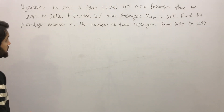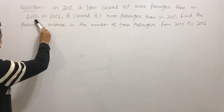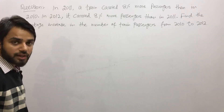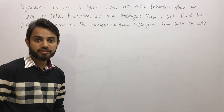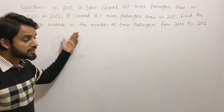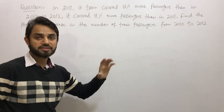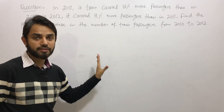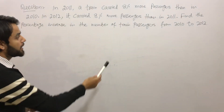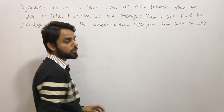The question says: in 2011, a train carried 8% more passengers than in 2010. In 2012, it carried 8% more passengers than in 2011. We don't know how many passengers the train was carrying initially in 2010, so we are going to solve this using the assumption method. Find the percentage increase in the number of train passengers from 2010 to 2012.